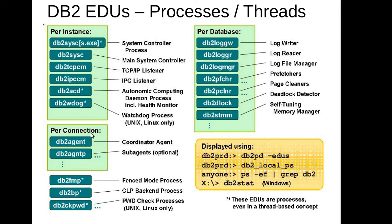For per-connection processes: whenever an application connection comes from the application server to the database, one db2 agent is required for every application connection. So if you have 100 connections, there will be 100 agents. Depending on workload, a db2 agent may spawn a sub-agent, though that is optional. These per-connection processes can only be seen using db2pd -edus, not through the ps -ef OS command.